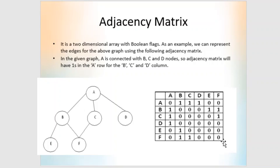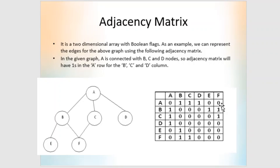To fill the adjacency matrix, consider each node. For node A: is there an edge from A to A? No. A to B? Yes — write 1. A to C? Yes — write 1. A to D? Yes — write 1. A to E? No. A to F? No. For node B: B to A? Yes — 1. B to B? No. B to C? No. B to D? No. B to E? Yes — 1. B to F? Yes — 1. Whenever there is an edge between two nodes, write 1; otherwise write 0. This completes the adjacency matrix.